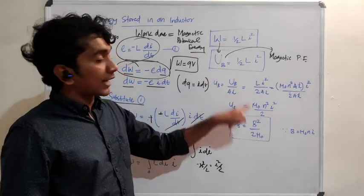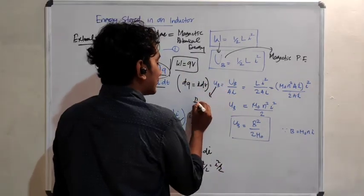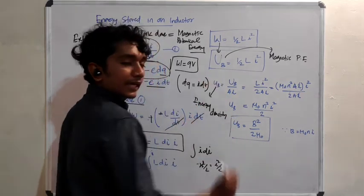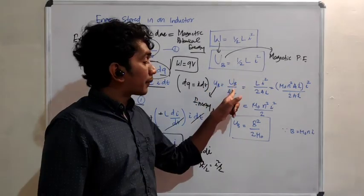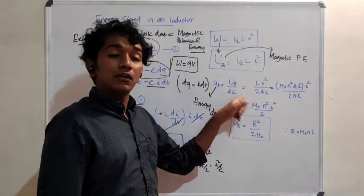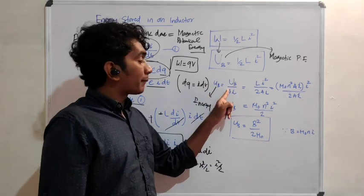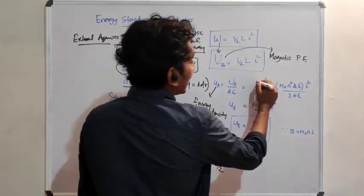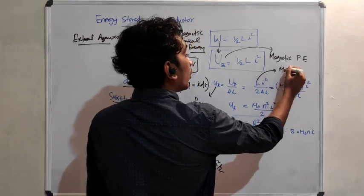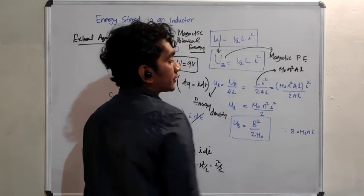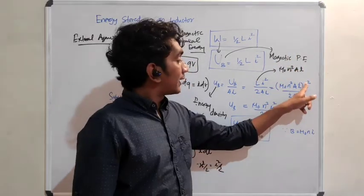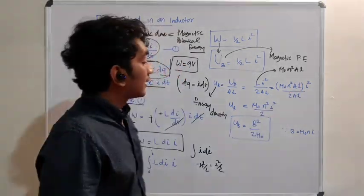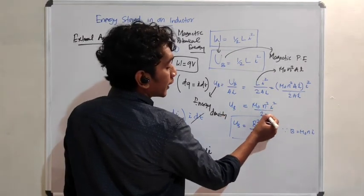Small uB is the energy density, equal to capital UB divided by volume. So uB = UB / (A times L), where A·L is the volume. Substituting UB = half L I squared and using L = μ₀N²A·L, and cancelling A and L, we get uB = μ₀N²I² / 2.